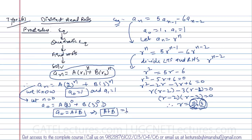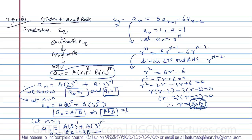Now let n = 1: a(1) = A·2¹ + B·3¹ = 2A + 3B. Since a(1) = 1, we get 2A + 3B = 1. So we now have two equations: A + B = 1 and 2A + 3B = 1.